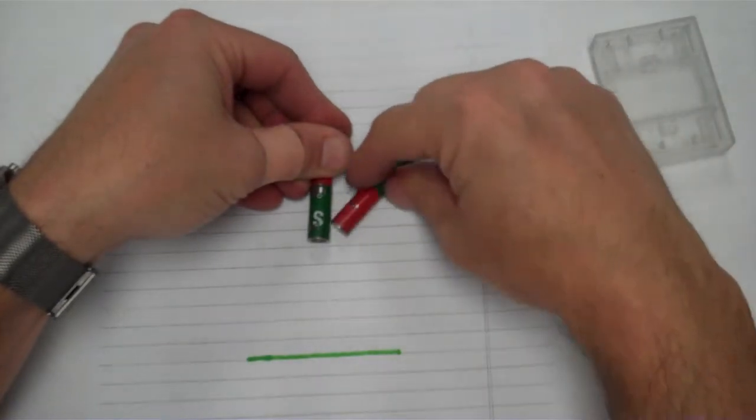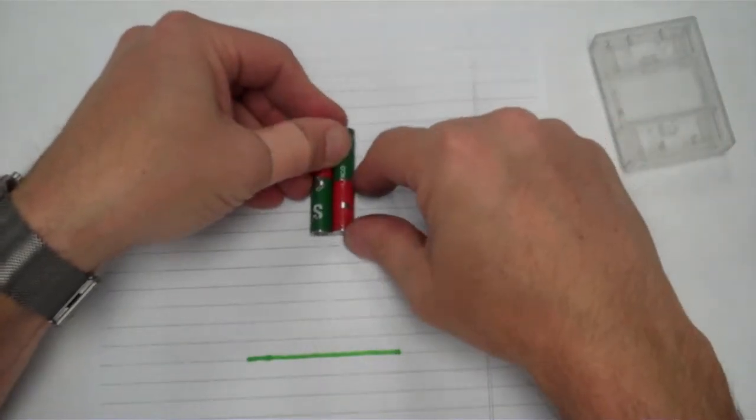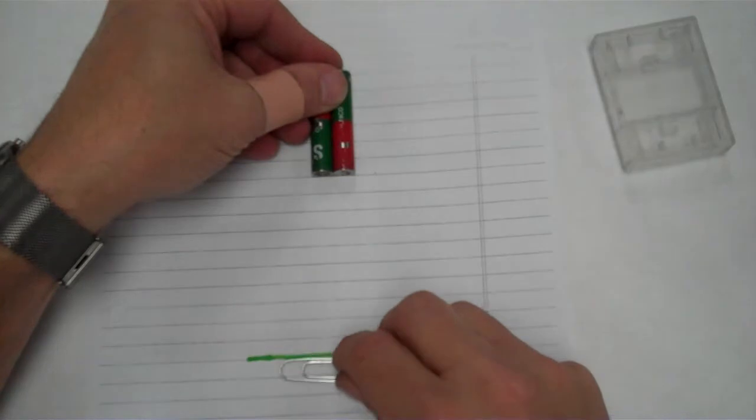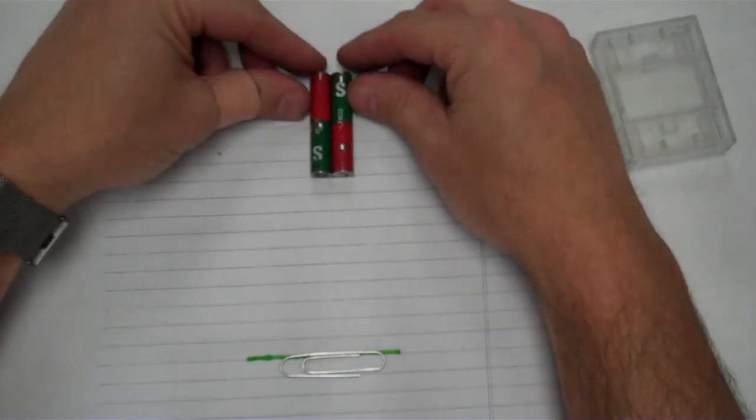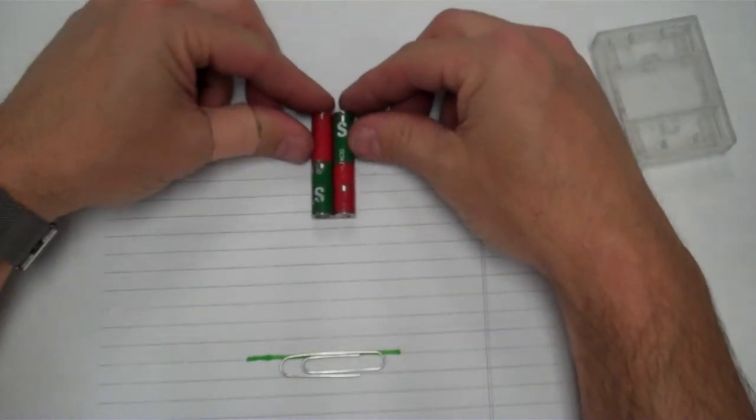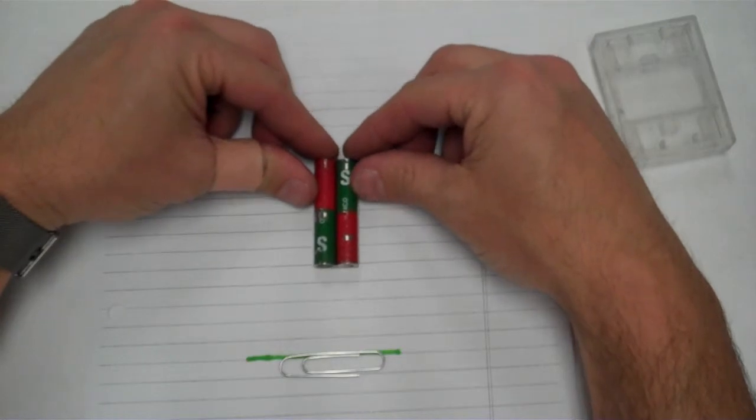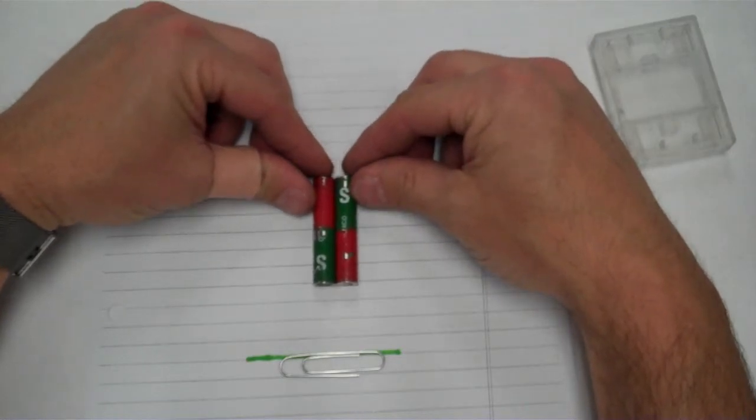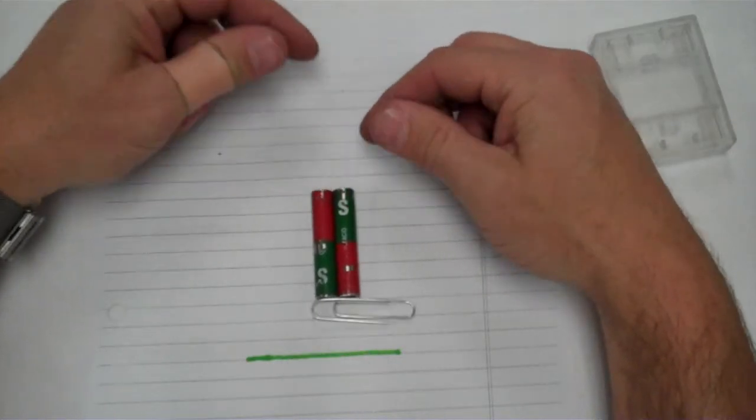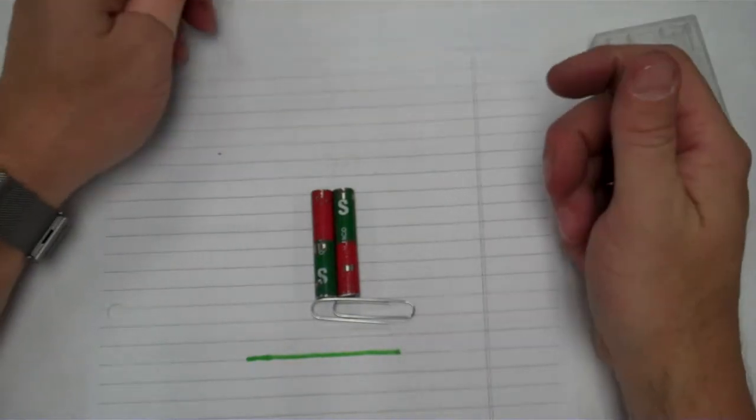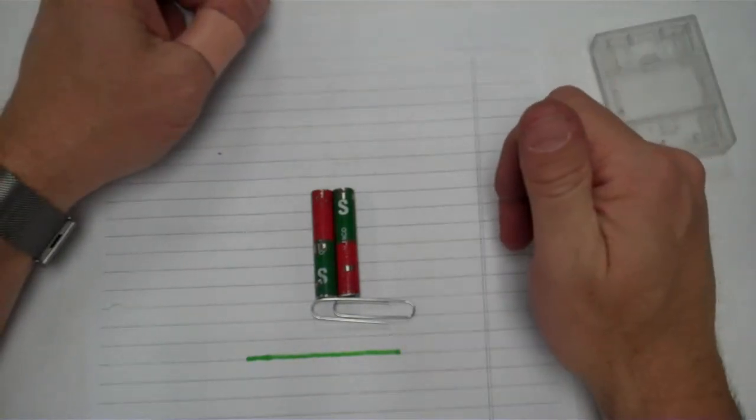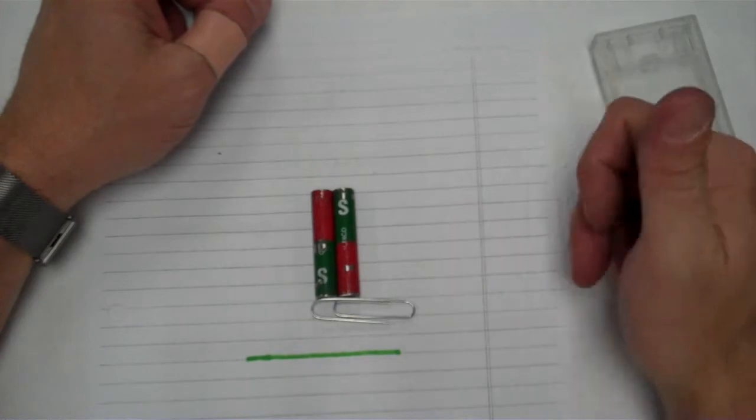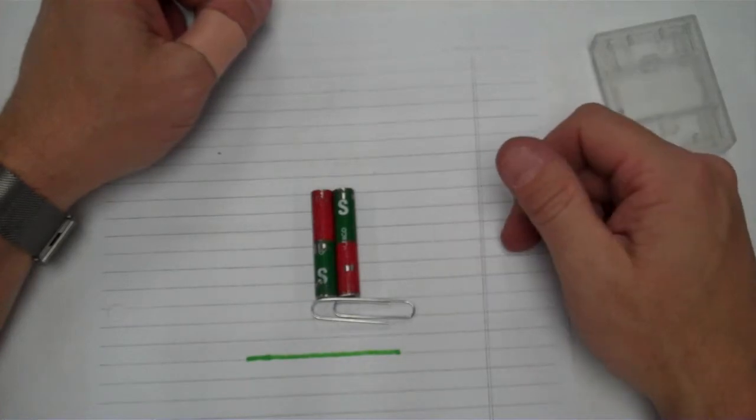Now I'm going to align a north and a south pole and I'll do it again. This time I can get much closer before—one, two—only three lines away before the paper clip is drawn to the magnets, indicating that in this orientation the magnetic field is not as strong.